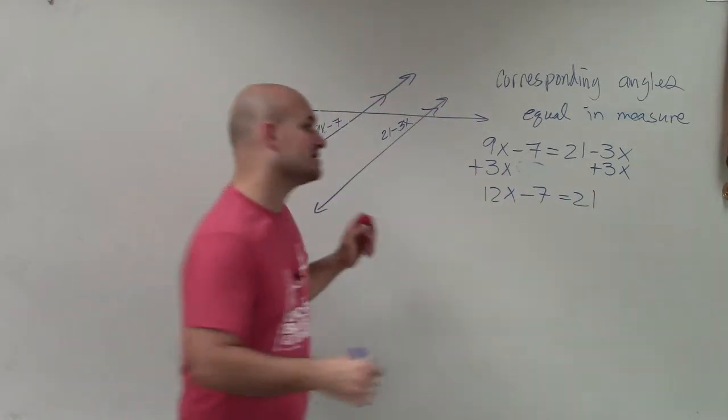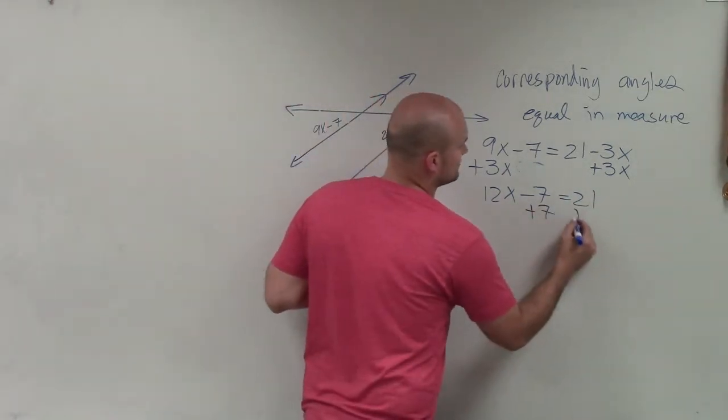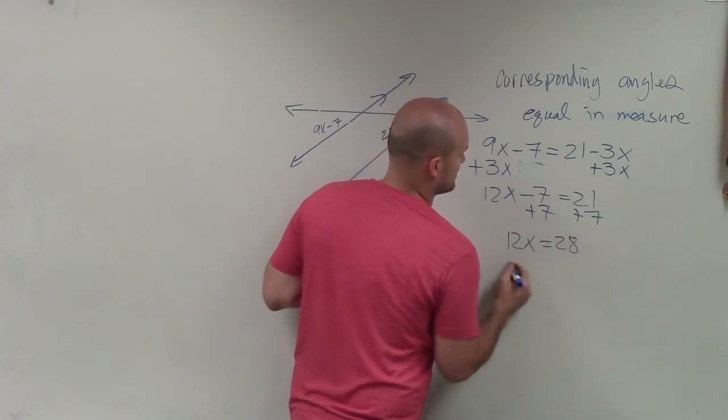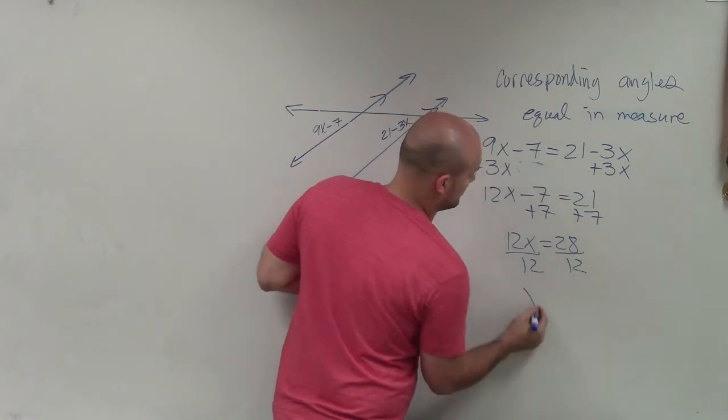Now, again, I want to solve for x. So I'm going to add 7 to the other side. I have 12x equals 28. Divide by 12.